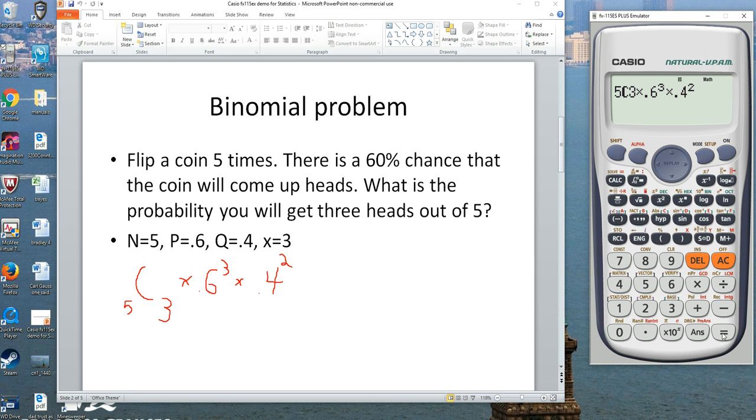Hit equal, hit decimal, 0.3456 is the right answer. That's a no muss, no fuss way of doing it. You didn't have to write down any intermediate results. You just use the formula just as it is.